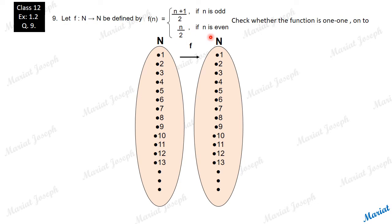If it is an even number, even number by 2 is the image. If you are picking an odd number, the odd number plus 1 by 2 will be the image.